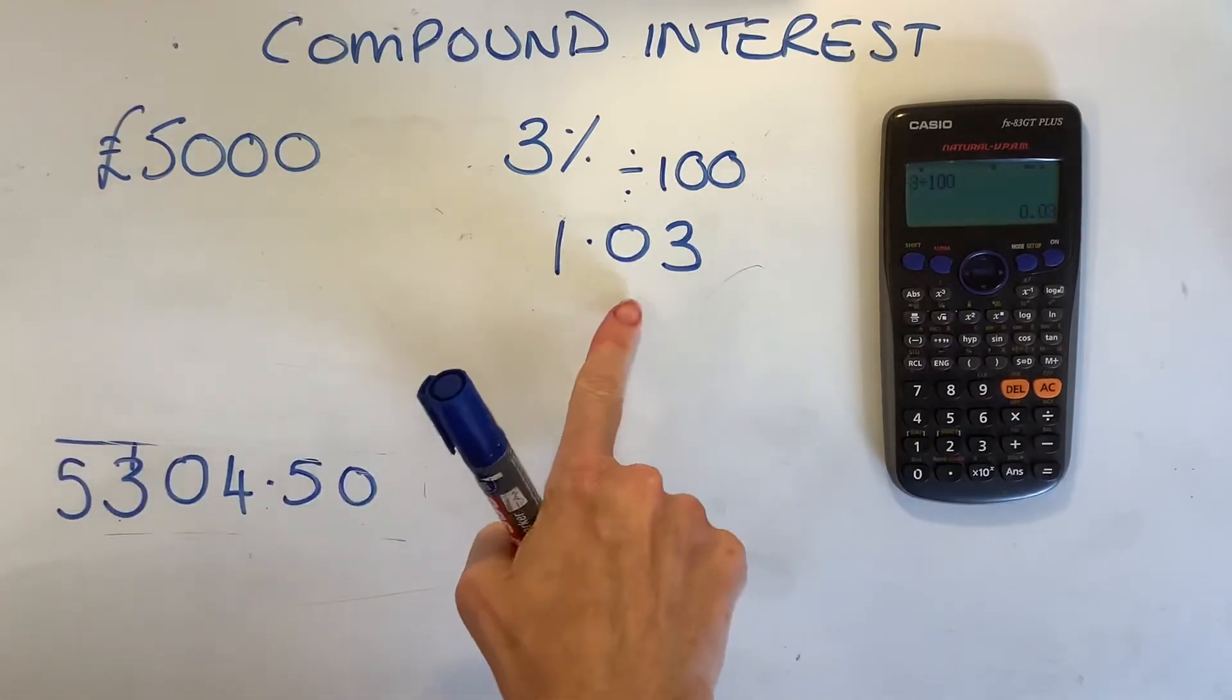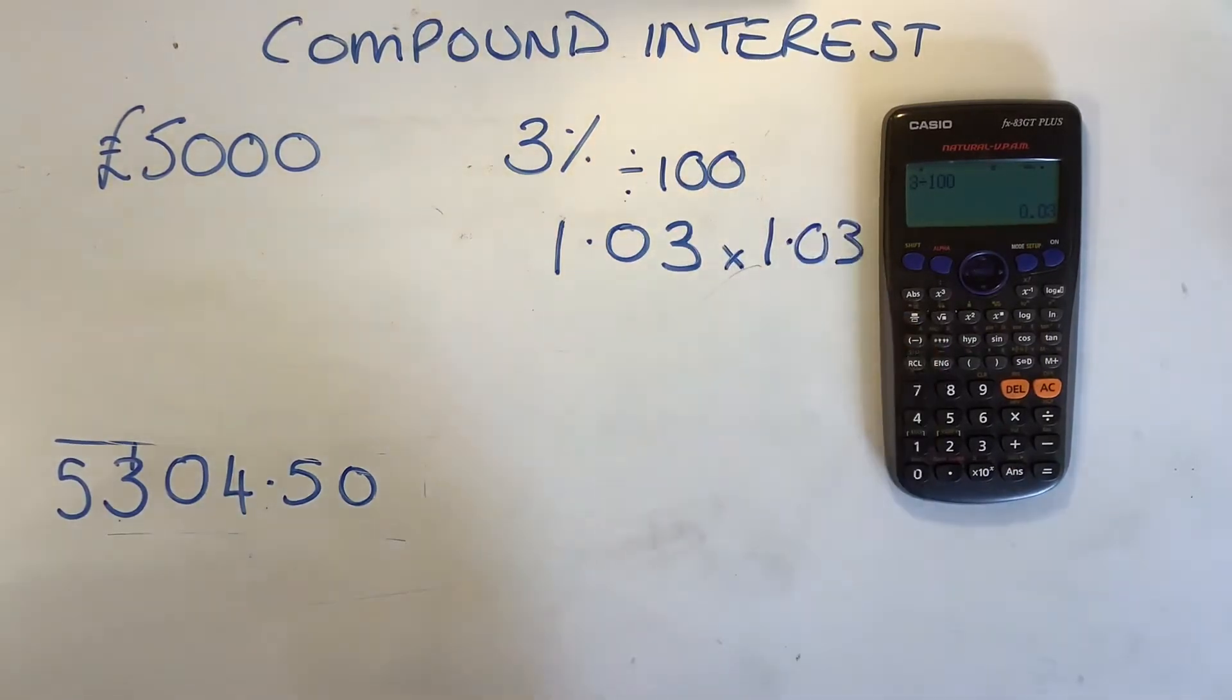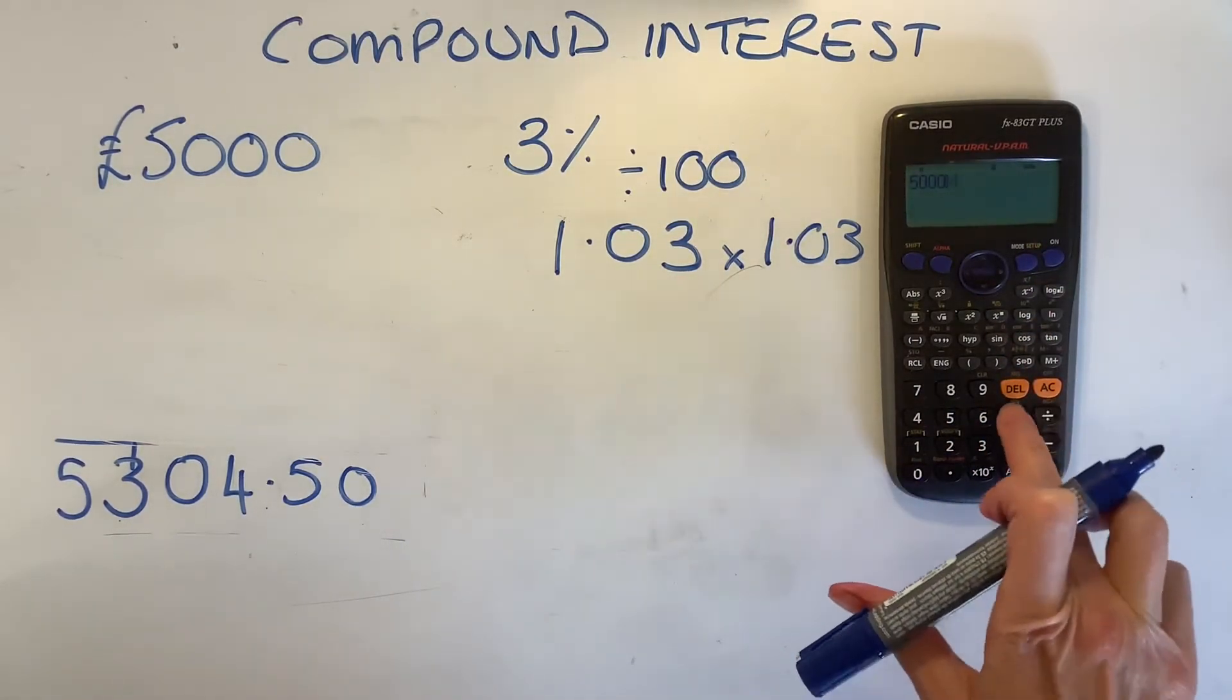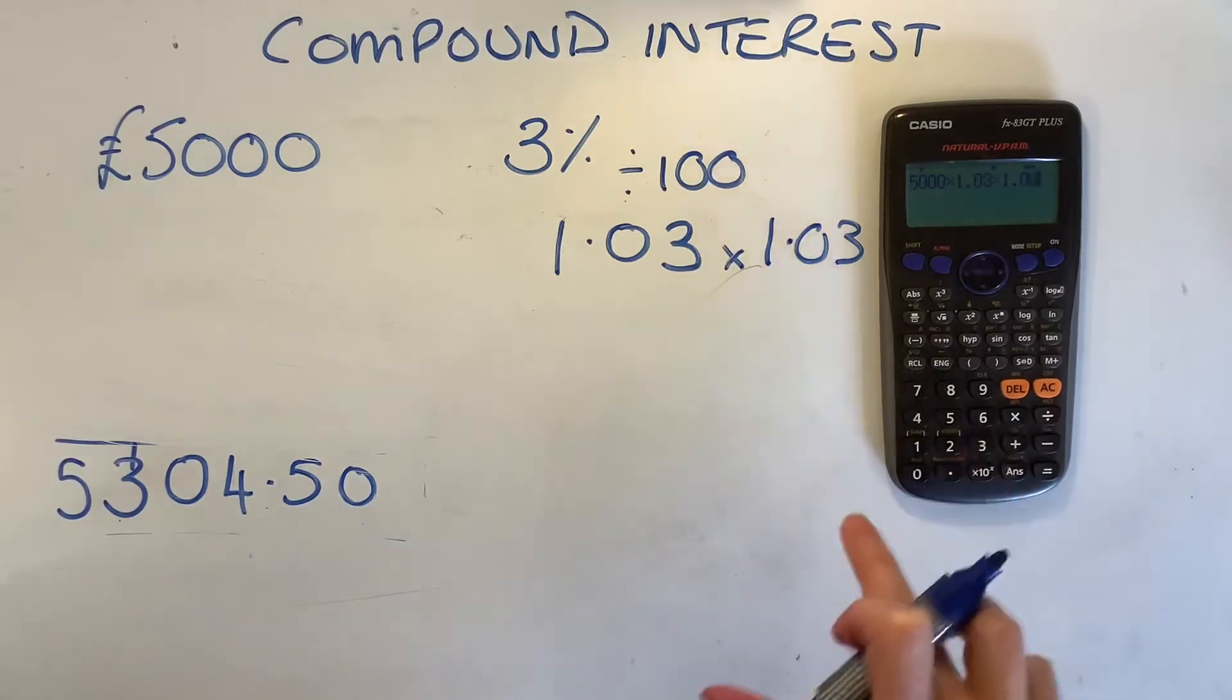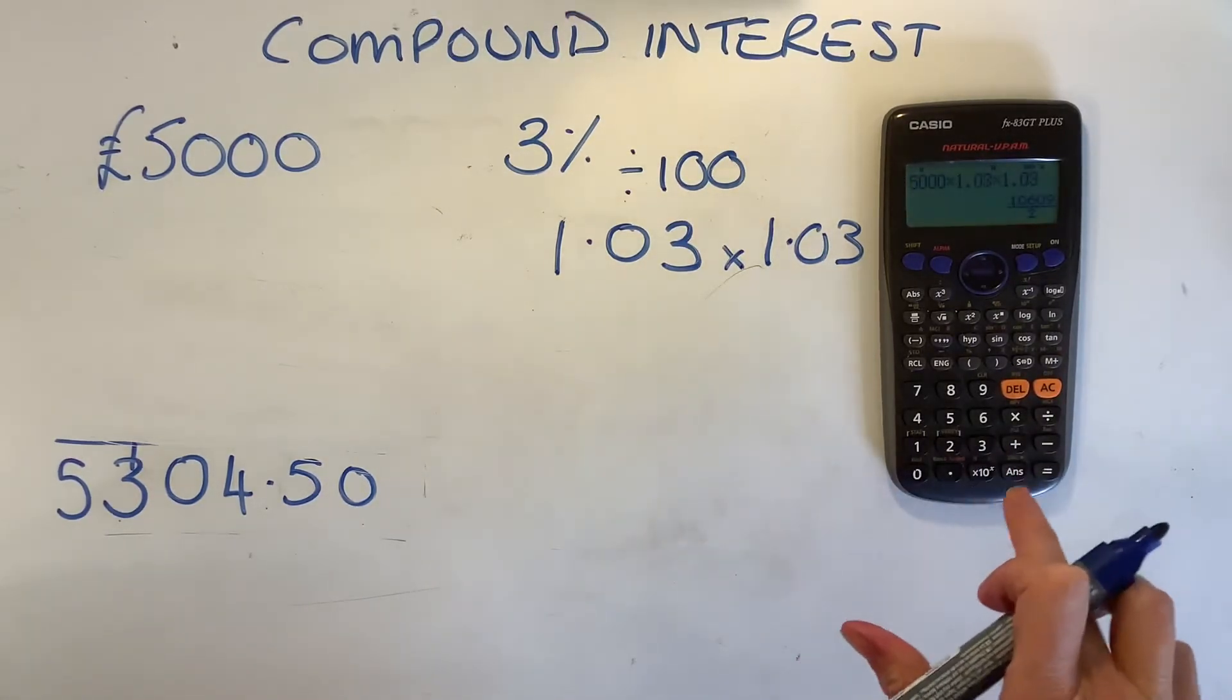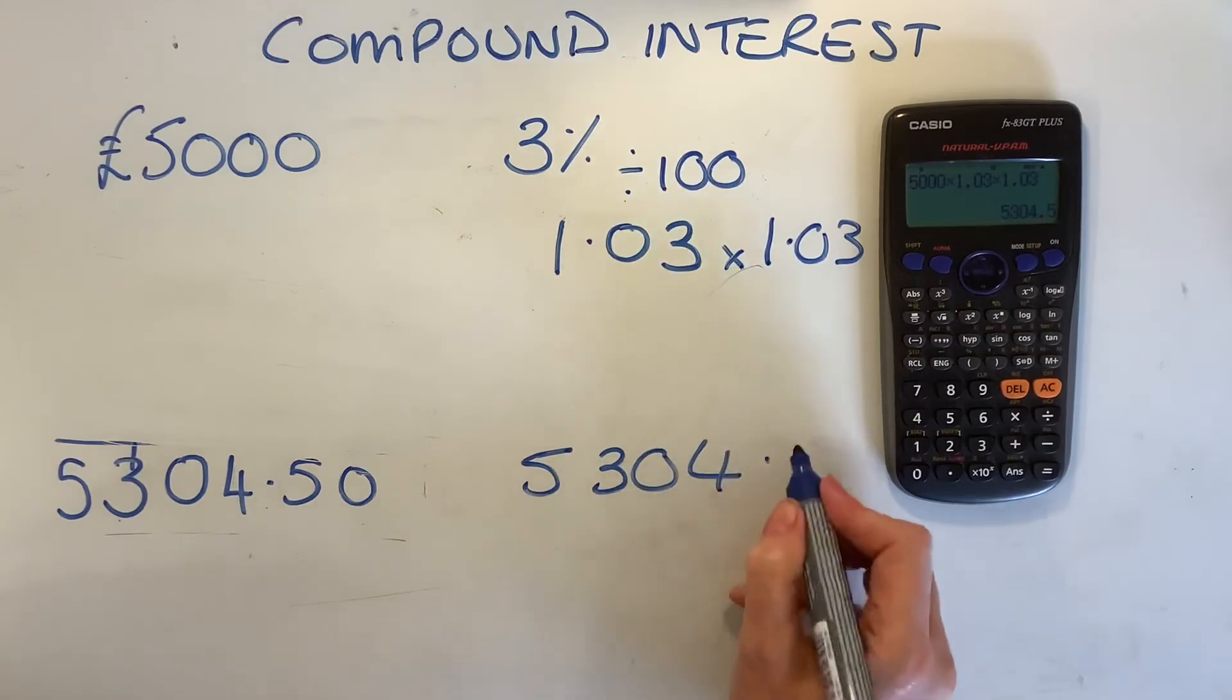I'm going to do 5,000 times 1.03, but it's 2 years, so I'm going to be sneaky. I'm going to times it by 1.03 twice. So, I'm going to put my 5,000 in, multiplied by 1.03, multiplied by 1.03. Have I keyed it in correctly? Yes, I have. Equals. First of all, I get it as a fraction, and then I click standard to decimal, and I get an answer of £5,304.5.